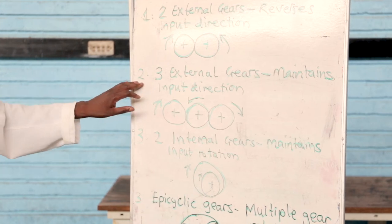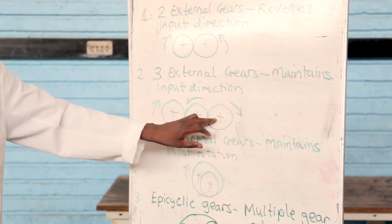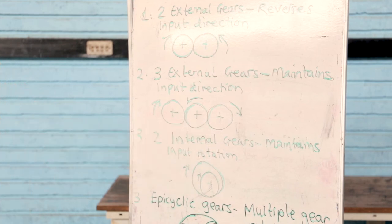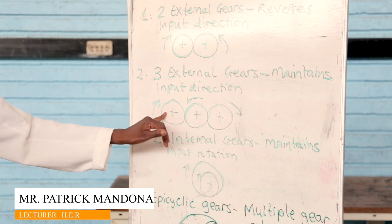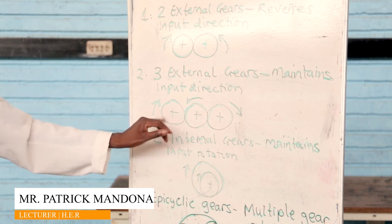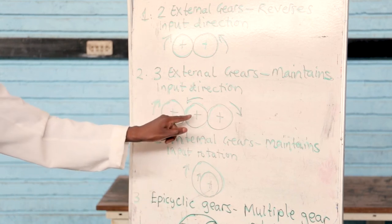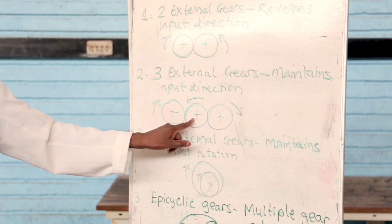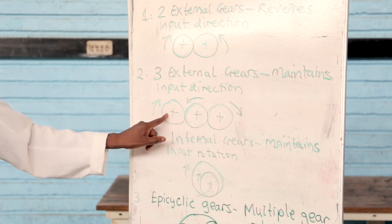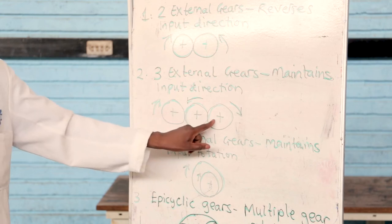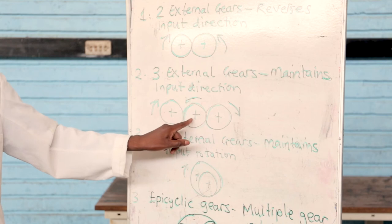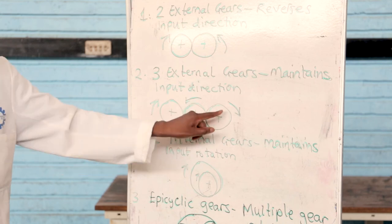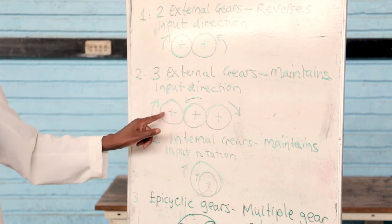The other design is where we have three gears coupled together or meshed. The first one will be the input gear rotating clockwise. Then an idler gear put in the middle will reverse the direction of the input gear. Then the third one becomes the output gear. Because there is an idler which is reversing, the third one will be in the same direction with the input.